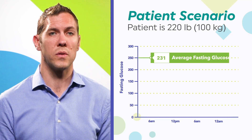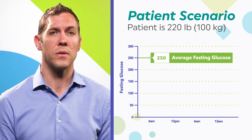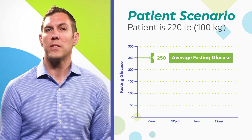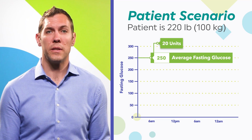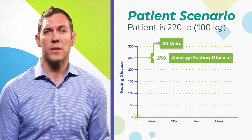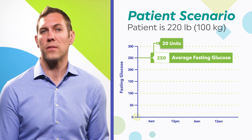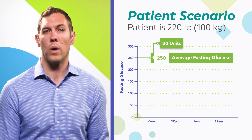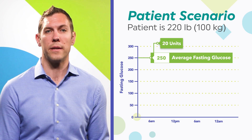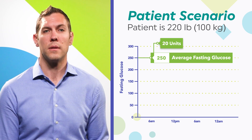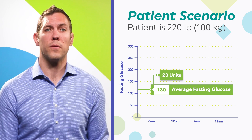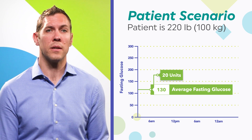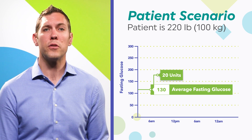Let's discuss the scenario of starting a patient on basal insulin. A patient is 220 pounds and their average fasting glucose is in the 250s. I would start them on 20 units, given the formula discussed based on their weight and fasting glucose being well above goal range.